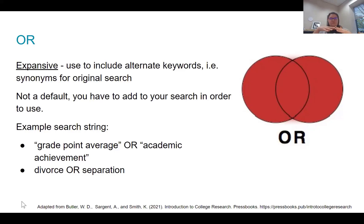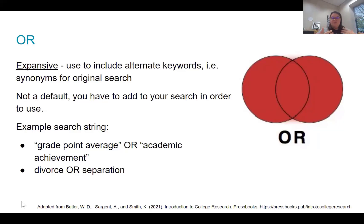For example, 'grade point average OR academic achievement' — grade point average is often associated with academic achievement; they're closely related, so research on one might be relevant to the other. Or more direct synonyms like 'divorce OR separation,' since separation is often a step toward divorce. Using OR with related terms can broaden your results to capture relevant sources you might otherwise miss.